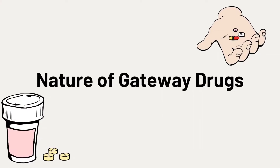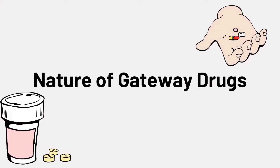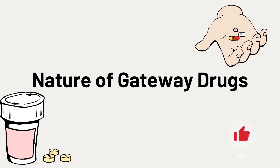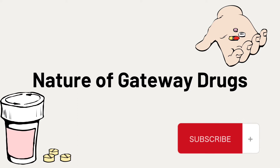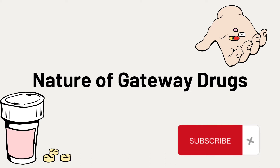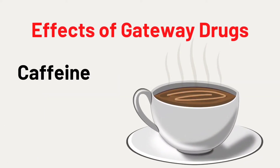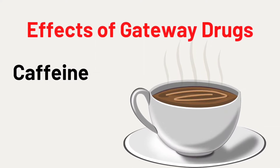Nature of gateway drugs: a drug is any substance that changes bodily functions. A gateway drug is a drug that is thought to lead to the use of more dangerous drugs. Examples of gateway drugs are caffeine, tobacco, and alcohol. These are readily available but sold only to adults.